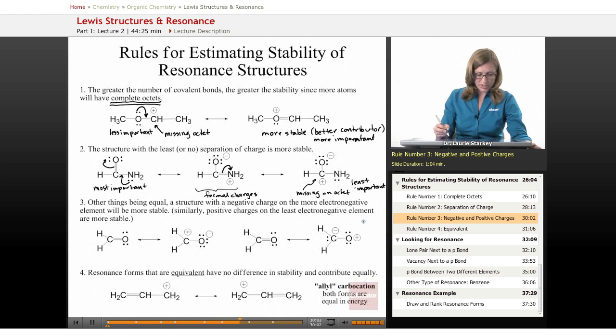Our third rule is that all other things being equal, a structure with a negative charge on the more electronegative element will be more stable. And similarly, if we have a positive charge that we're delocalizing, positive charges on the least electronegative atom will be more stable. So for example, when we look at this carbonyl, a CO double bond is called a carbonyl. We can pick this lone pair up and move it to the oxygen to get a C plus and an O minus.